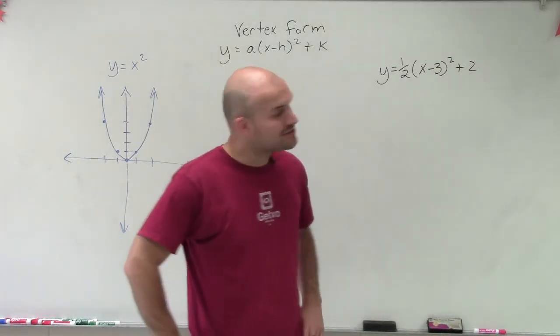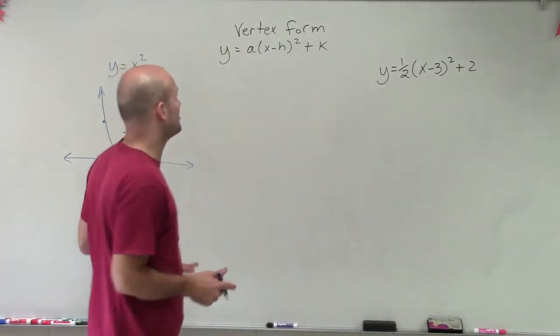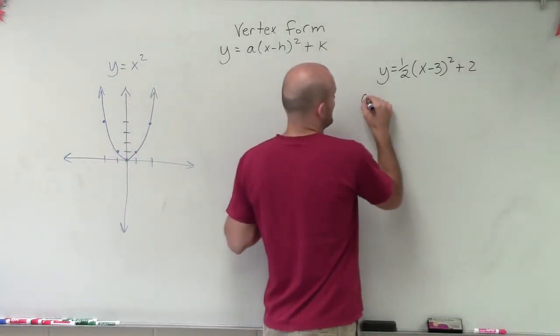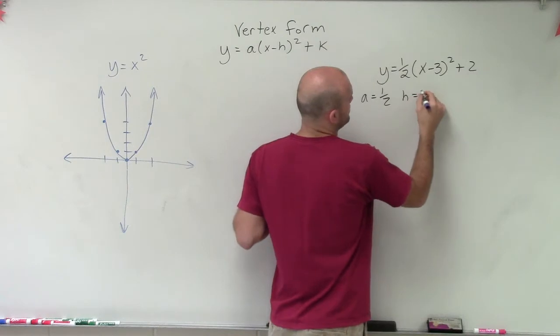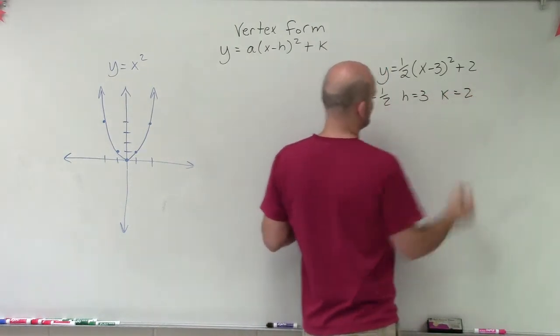And what we're going to do to graph this is we're going to use vertex form. When you apply vertex form, it's important to understand what our components are. So a equals 1/2, h equals 3, and k equals positive 2.